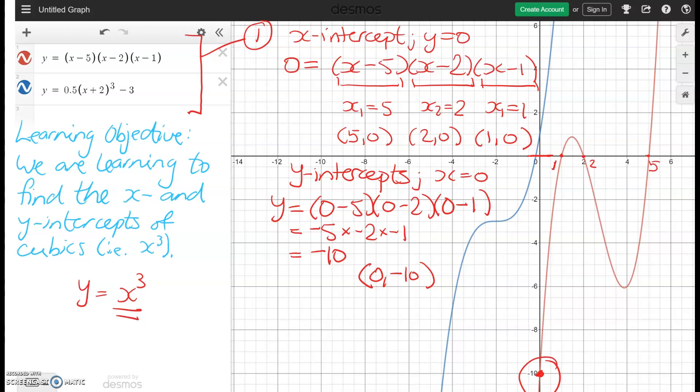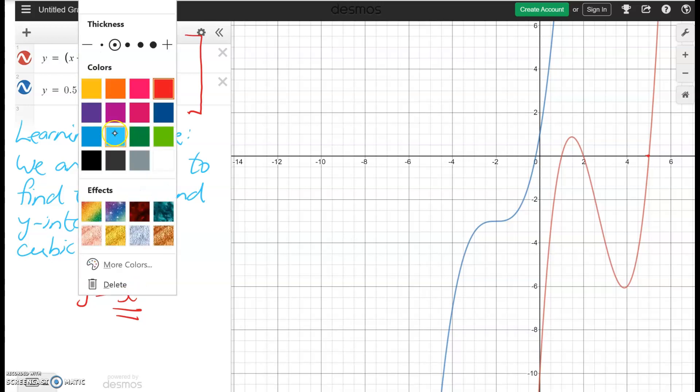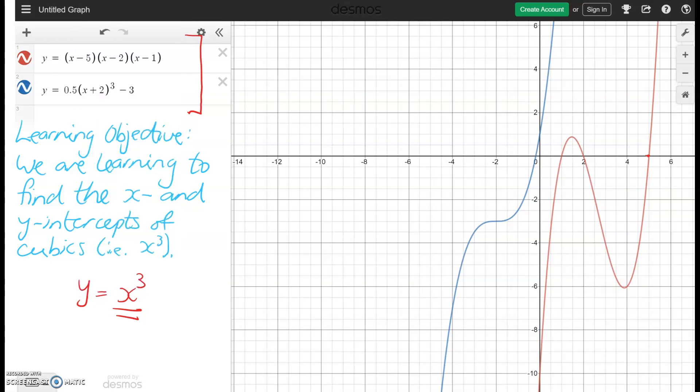Those would be the answers of the x and y intercepts for the red graph. We're now going to remove all of this and have a go at finding the x and y intercepts of our second or blue graph using the same methods. So I've now got the blue pen. We're looking at question number two.